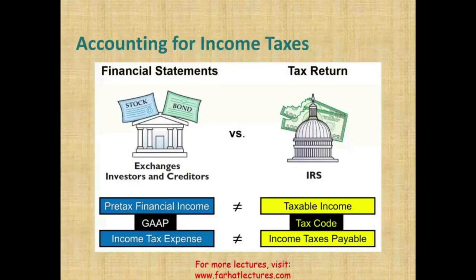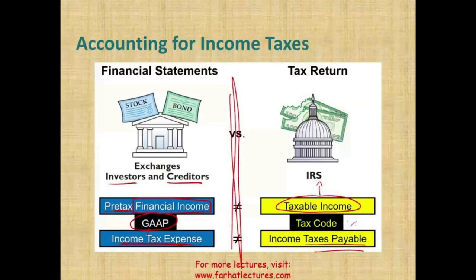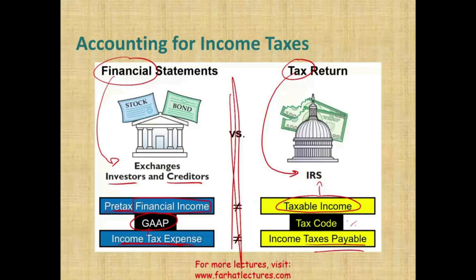Here's a picture of what I just said. We have investors and creditors — they follow GAAP — so they compute something called pre-tax financial income. Pre-tax financial income gives them their income tax expense, which is a GAAP terminology. For tax purposes, we use the term taxable income. We compute our taxes and come up with income taxes payable. Notice the differences in terminology and actual computation between financial statements and tax returns.